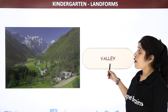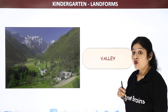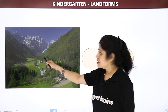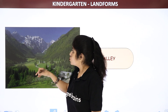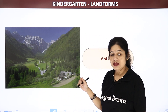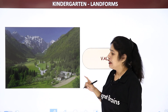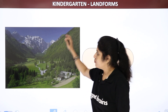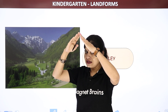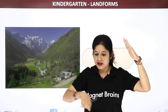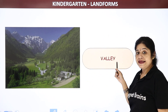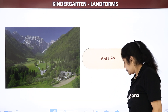Now let's see valley. What is a valley? Valley is between two mountains. Can you see this mountain and this other mountain? The V-shape structure between these two mountains is known as a valley. One mountain is like this and another mountain is like this — it creates a V structure between both the mountains. That is known as a valley.